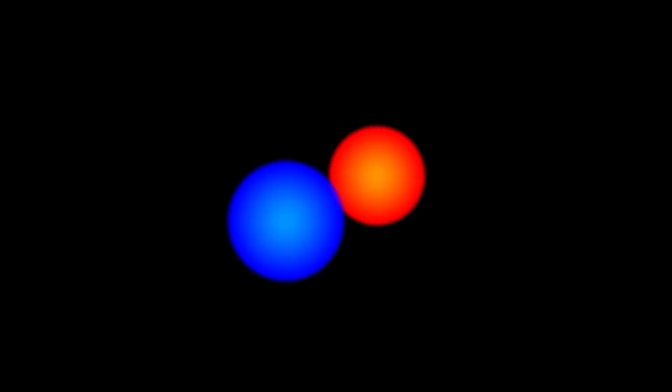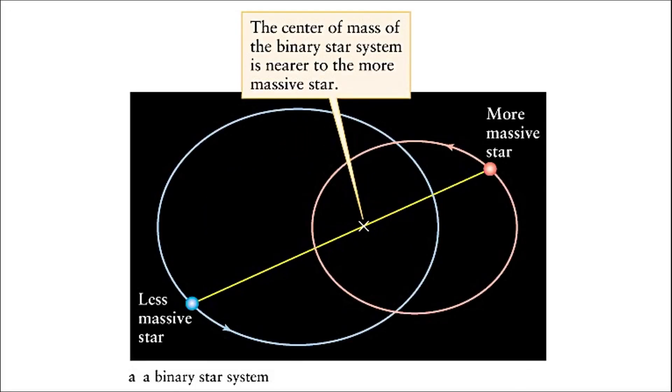So how do we actually determine the mass of a star? We have to observe it as it orbits its companion. In a binary star system, the two stars will orbit their common center of mass.